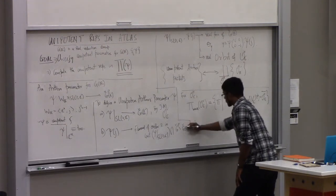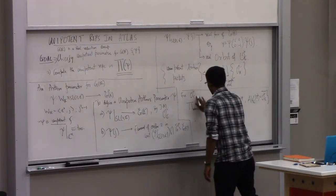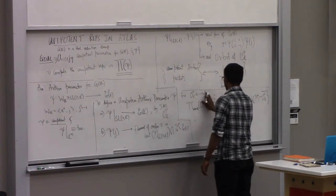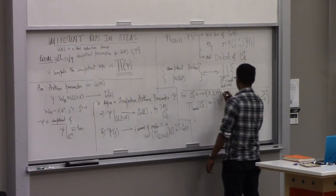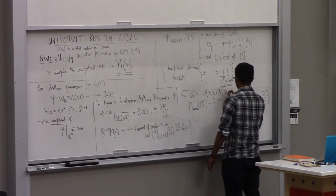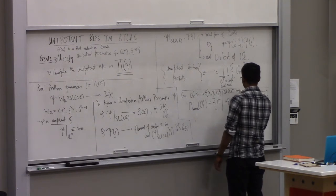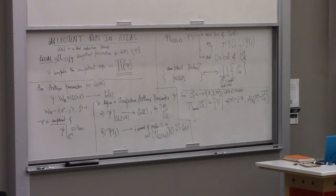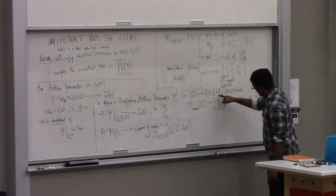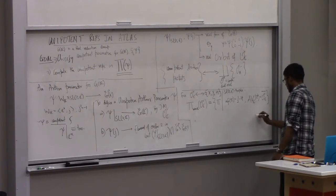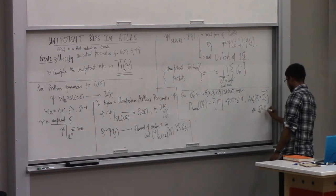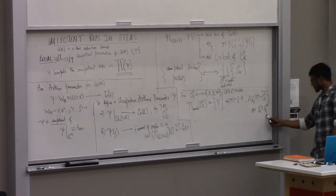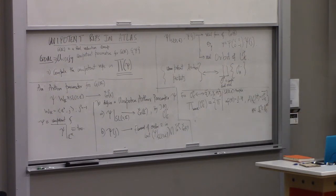This guy here, once I fix this, is going to give me my SL(2) triple, which is going to be x, y, h. This is my SL(2) triple corresponding to my complex dual nilpotent orbit. Which means your h is going to be an element of h check, which is isomorphic to h star. So it is a valid infinitesimal character.